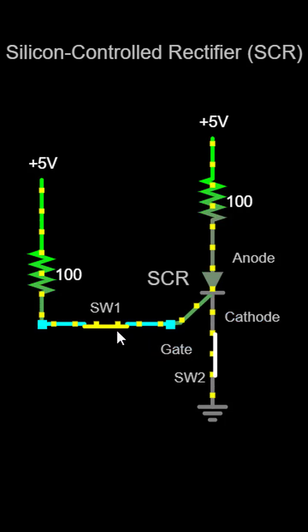The SCR operates in two states: the off-state and the on-state. In the off-state, the SCR blocks current flow, acting as an open switch.